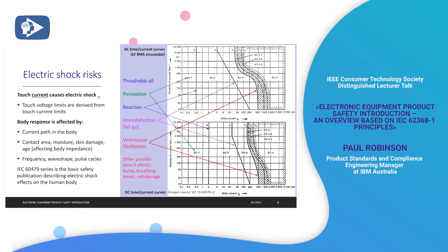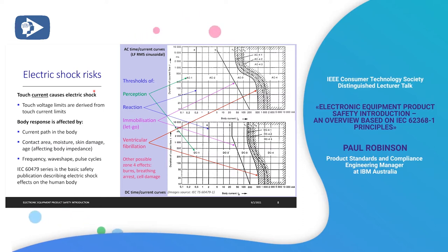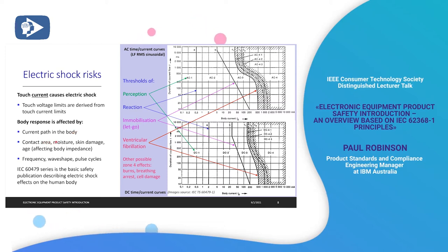For electric shock risks — people argue about voltage but it's not voltage that causes electric shock; the main factor is electric current, specifically current through the heart. The amount of current can be affected by contact area, moisture, skin damage, age, gender, frequency, and wave shape. All those factors affect the current passing through the body and its effects.